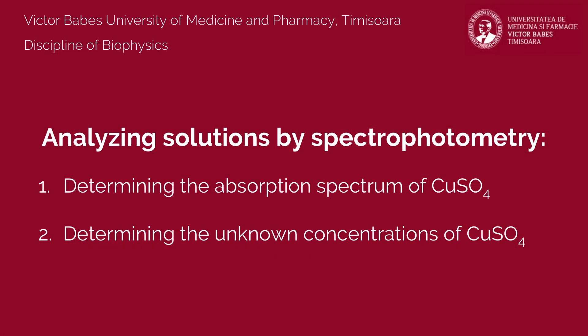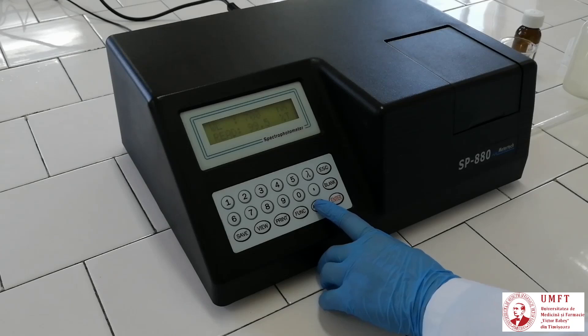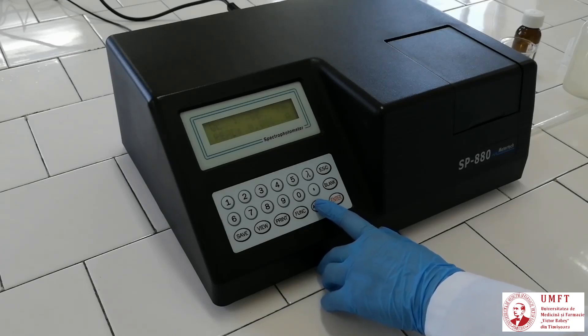In the first part of the experiment, you will obtain the absorption spectrum of copper sulfate within the 2% solution. For that, you will measure its absorbance in the 400 to 700 nm wavelength range. Select the absorbance working mode using the ATC button.